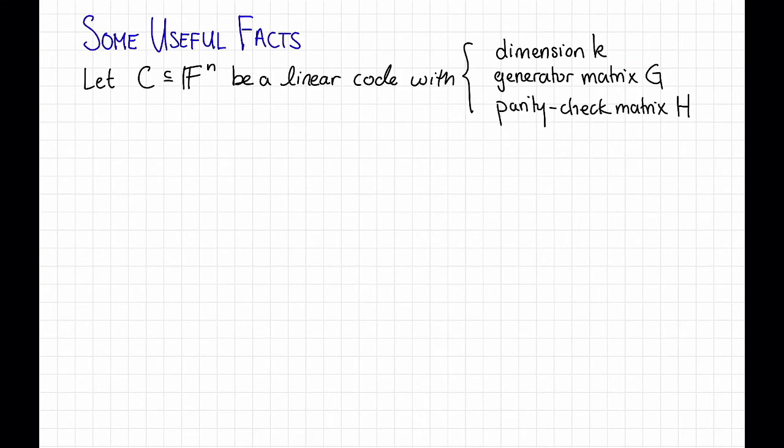With these definitions under our belts, let's record some useful facts about generator matrices and parity check matrices. We've already seen some of these facts in the context of that Hamming code example a few videos ago. So I'm not going to prove them here because we essentially already did when we talked about the Hamming code, but you should make sure you understand why all of these are true.